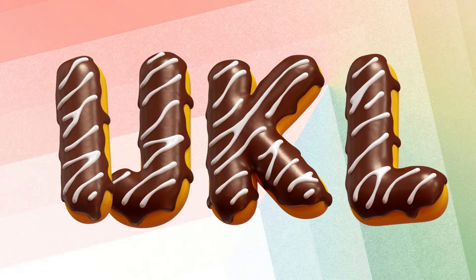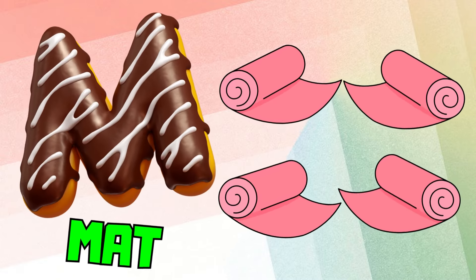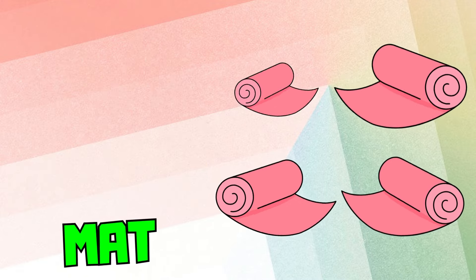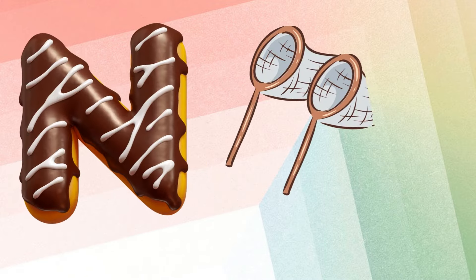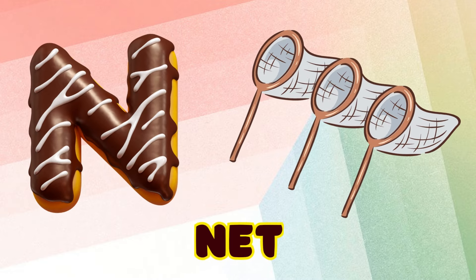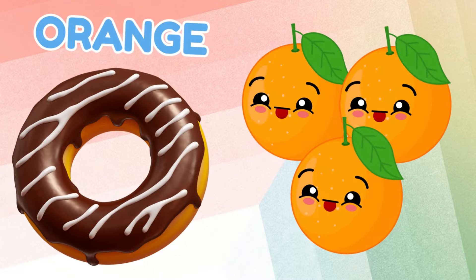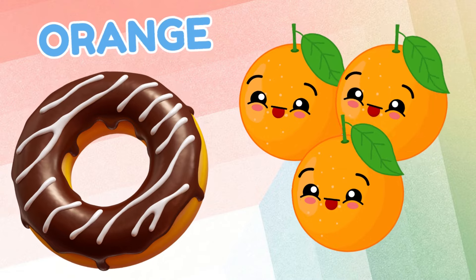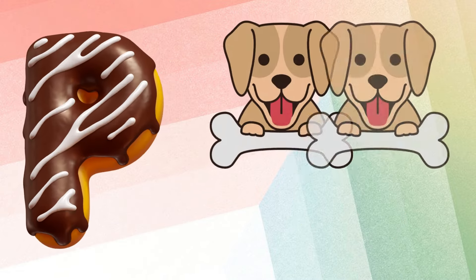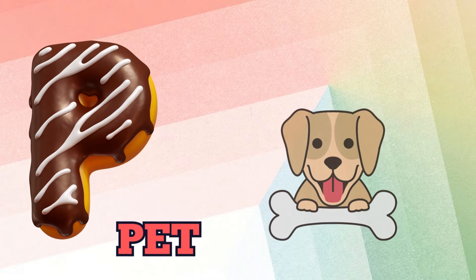M is for mat, m-m-mat. N is for net, n-n-net. O is for orange, o-o-orange. P is for pet, p-p-pet.